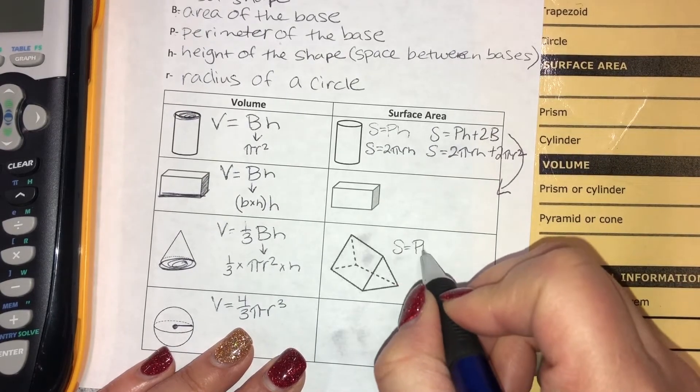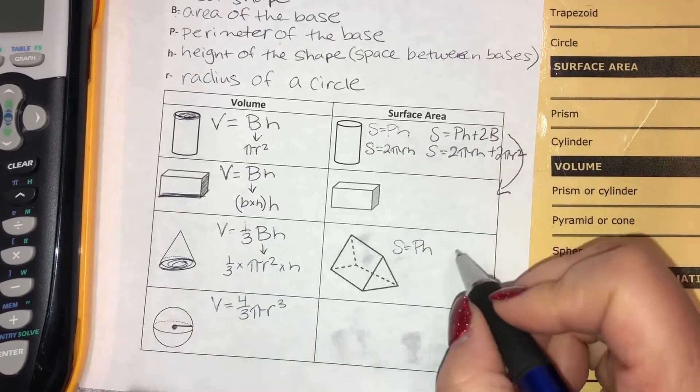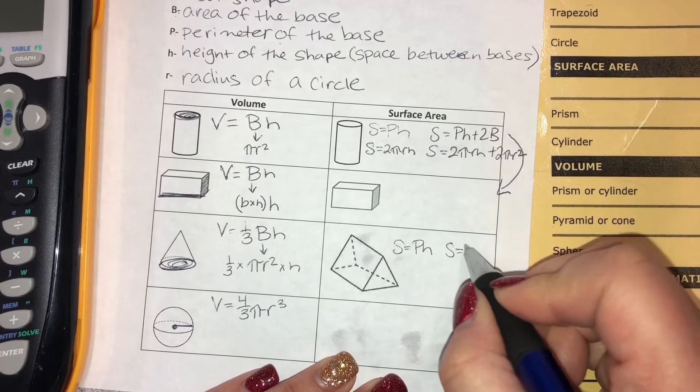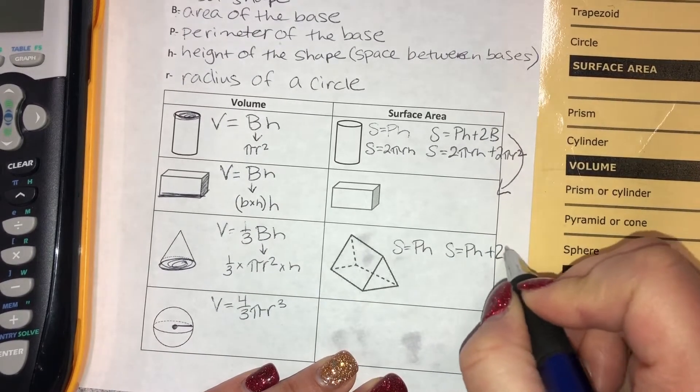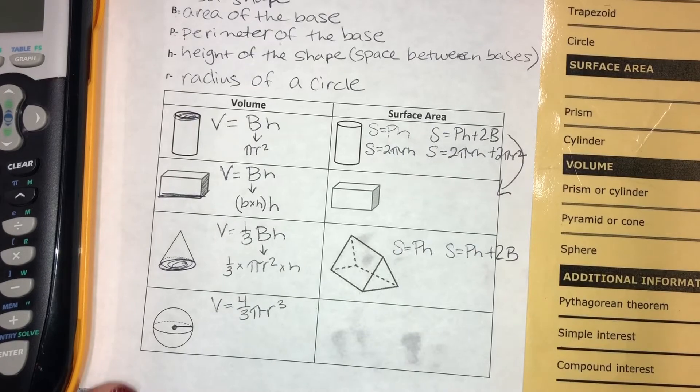And then S equals PH for a triangular prism, and S equals PH plus 2B for the total.